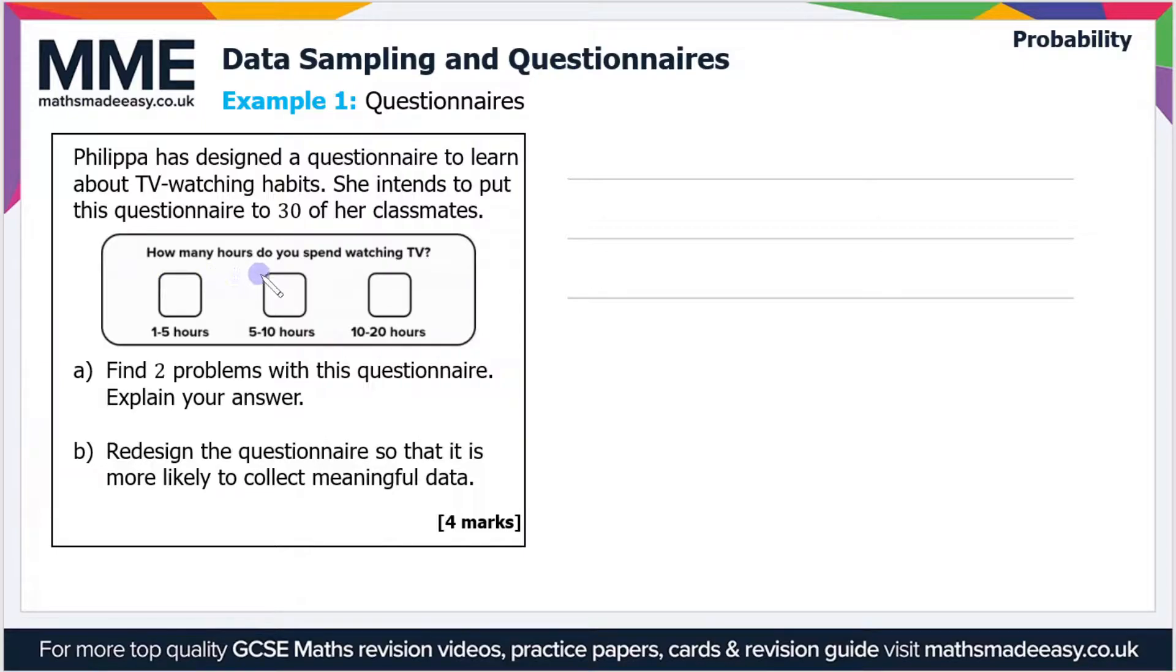If we have a look, it says how many hours do you spend watching TV, and the options are one to five, five to ten, and ten to twenty. So the first problem I'm picking up on here is that the response boxes overlap. So if I watch five hours of TV, do I tick this box or this box? It's not clear.